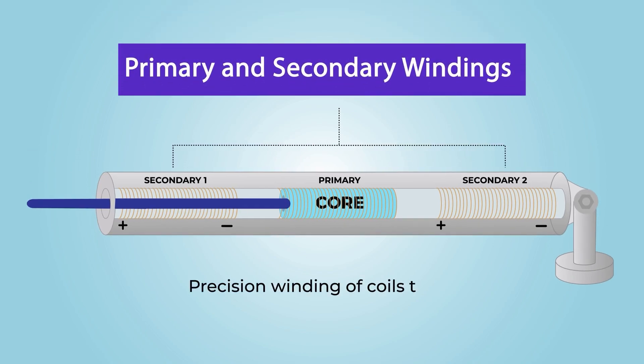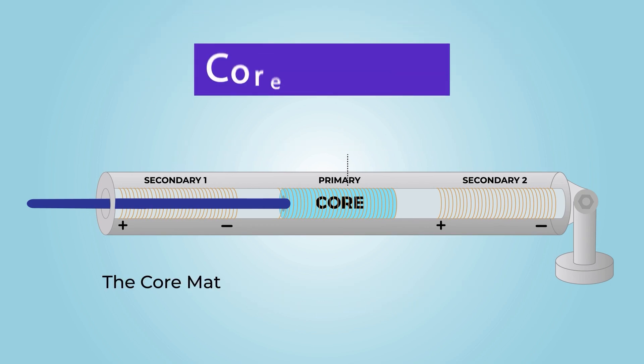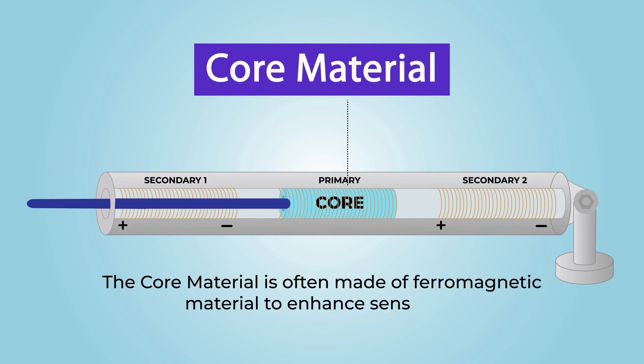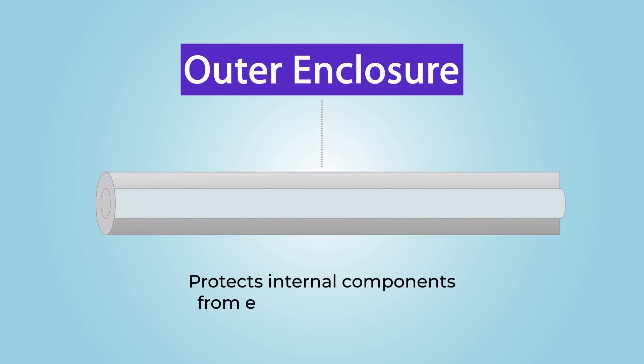The precision winding of the primary and secondary coils ensures optimal performance. The core material is often made of ferromagnetic material to enhance sensitivity. The outer enclosure protects internal components from environmental factors.